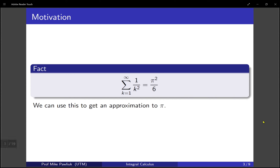Our motivation is the following fact. The sum of 1 over k squared from k equals 1 to infinity is pi squared over 6. Now that's not a fact we're going to prove in a first integral calculus course, but we're going to use it for this video. And you can use this fact to get an approximation for pi.